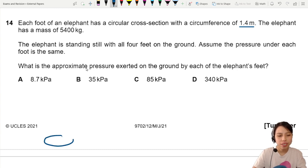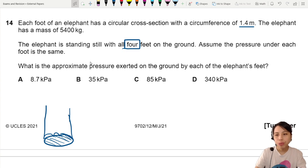I guess this is how elephant feet look like. They have nails like this. Okay, the elephant is standing still with all four feet. That's an important thing, four feet on the ground. Assume the pressure under each foot is the same, evenly distributed.